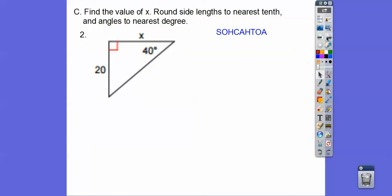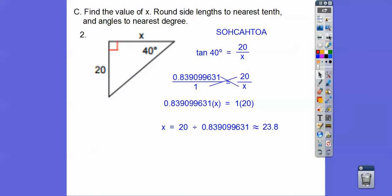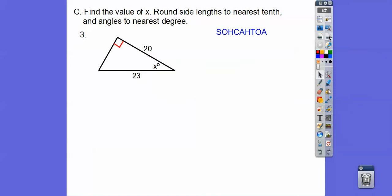So this one here, the hypotenuse is not being considered on this triangle right here. So this is a tangent ratio. So the tangent of 40 is opposite over adjacent, so 20 over x right there. Find the tangent of 40, cross multiply, and then we have to divide. So I get about 23.8.